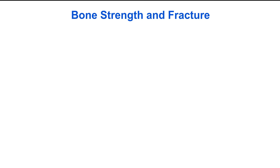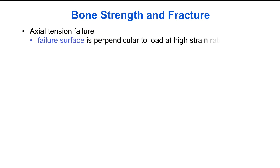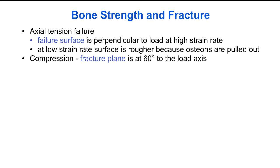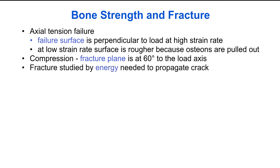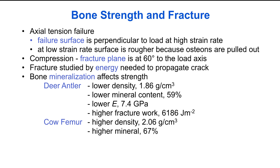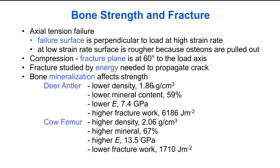The way bone fails also depends on loading conditions. Under axial tension, the failure surface is fairly perpendicular to the load at high strain rates, but at low strain rates the surface is rougher because the osteons are pulled apart. Under compression, the fracture plane is typically about 60 degrees to the load axis. The mineralization of bone significantly affects its strength — deer antler has lower density and lower mineral content than cow femur, giving it a lower Young's modulus but a higher fracture work, because more collagen makes it less brittle.